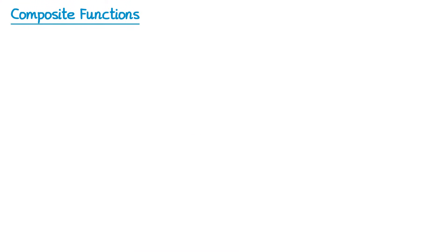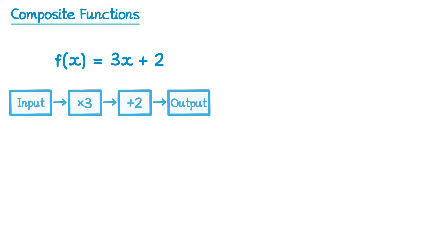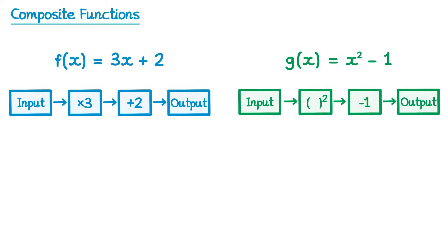In this video we're going to learn about composite functions. Imagine we had a function f equals 3x plus 2 — that would have a function machine that looked like this. Imagine we had a second function g which was x squared minus 1 — that would have a function machine that looks like this.